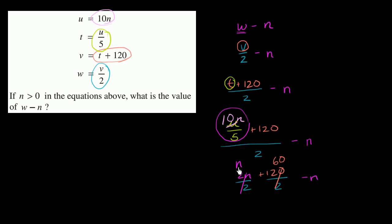And so we have n plus 60 minus n. Well, n minus n, those cancel out, so we're just left with 60. This thing right over here is equal to 60.